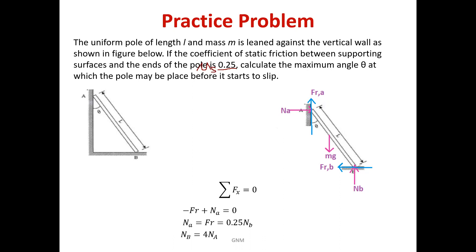Draw the ladder as it is and make it free from its surroundings. The weight of the ladder acts vertically downward. For floor end B, normal reaction NB is vertically upward. Friction force FRB is opposite to the direction of possible motion — if the ladder slips, end B goes away from the wall, so FRB is directed towards the wall. For end A, if the ladder slips, its A end will go down, so friction force FRA is vertically upward. This is the complete FBD of the given ladder.